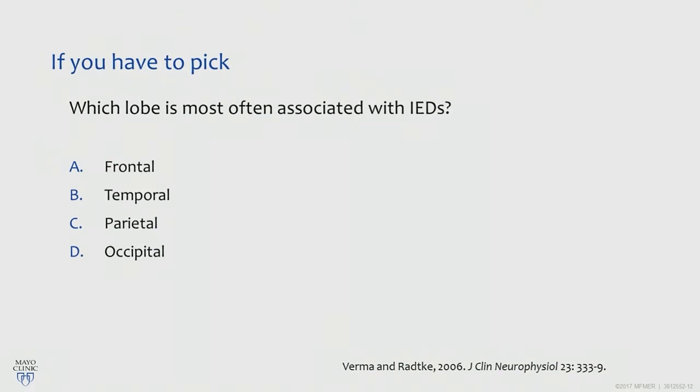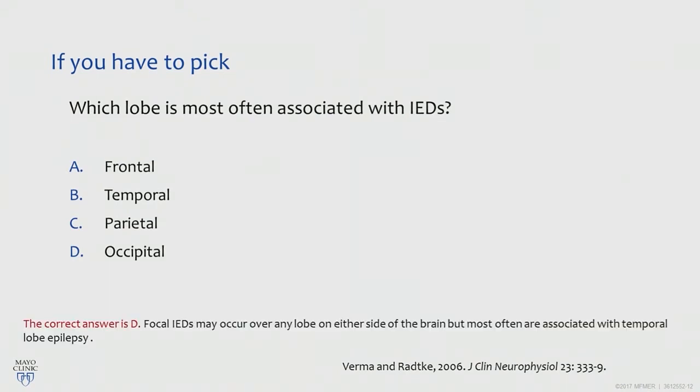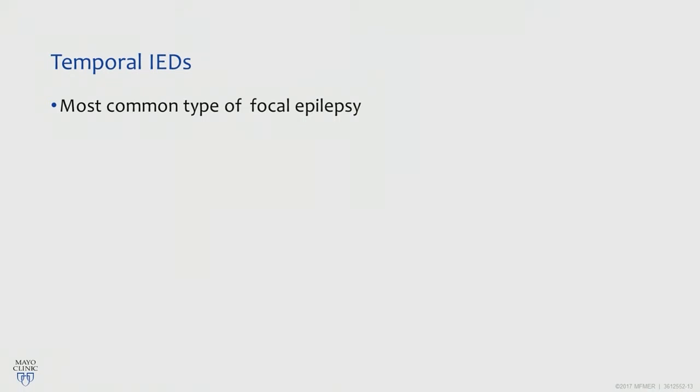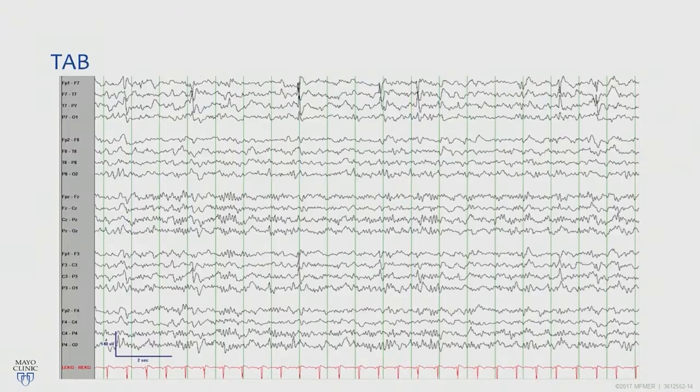You can see epileptiform discharge in any lobe, but it's quite common in the temporal lobe. Temporal lobe epilepsy is known to have interictal epileptiform discharge. This is actually the most common type of epilepsy, which is probably why you see a lot of temporal discharge. It's truly more epileptogenic — temporal lobe discharge is more epileptogenic than frontal, and it's highly associated with temporal lobe epilepsy.